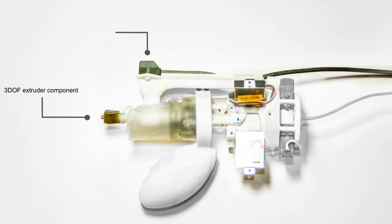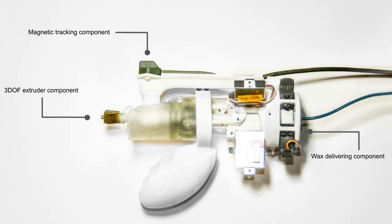The Decoil system centers on an actuated wax extruder. It consists of an actuated 3D mechanism to freely move the extruder tip, a magnetic tracking system for position sensing, and a customized wax wire delivering component for material feeding.